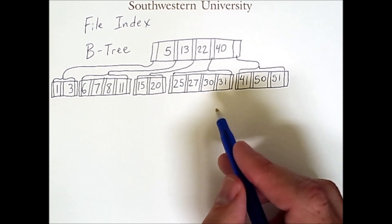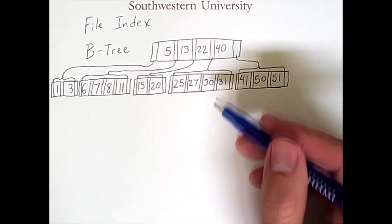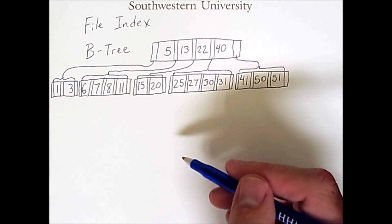So this tree is sorted. Now this tree can actually be more than two levels deep, and we'll see an example of how that occurs in a moment.